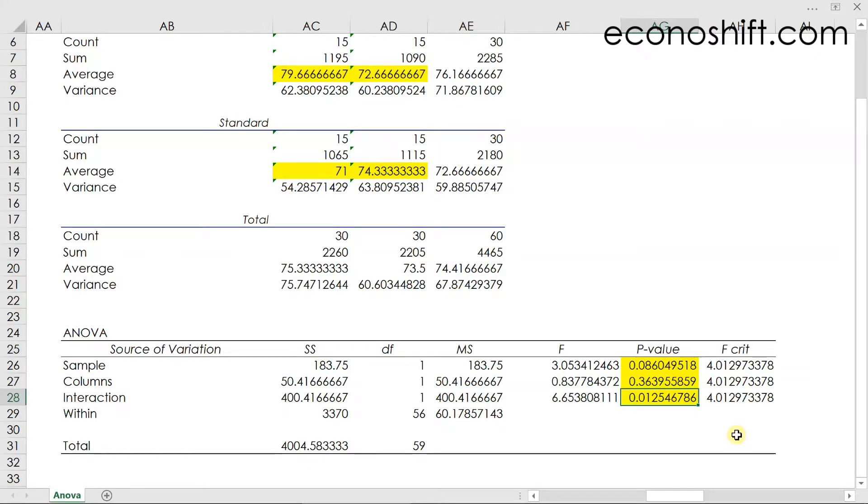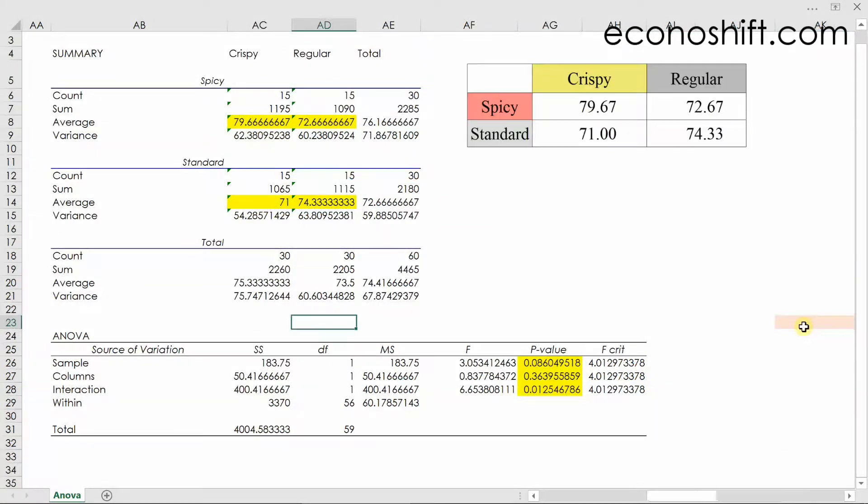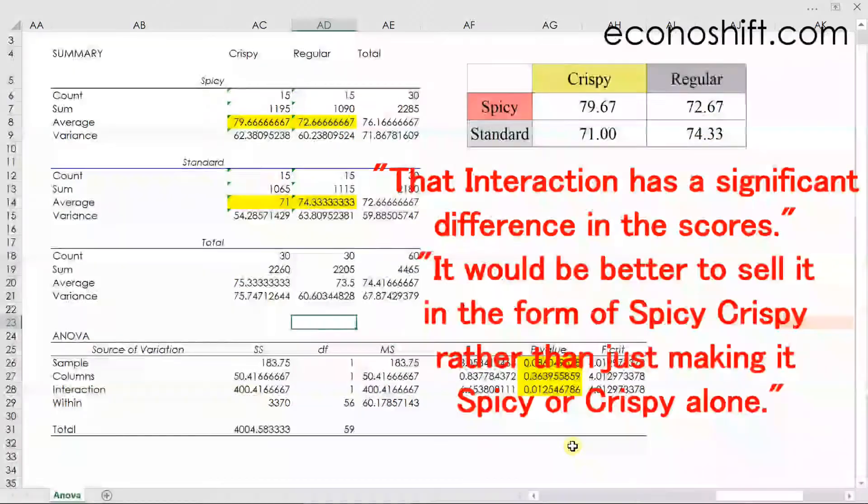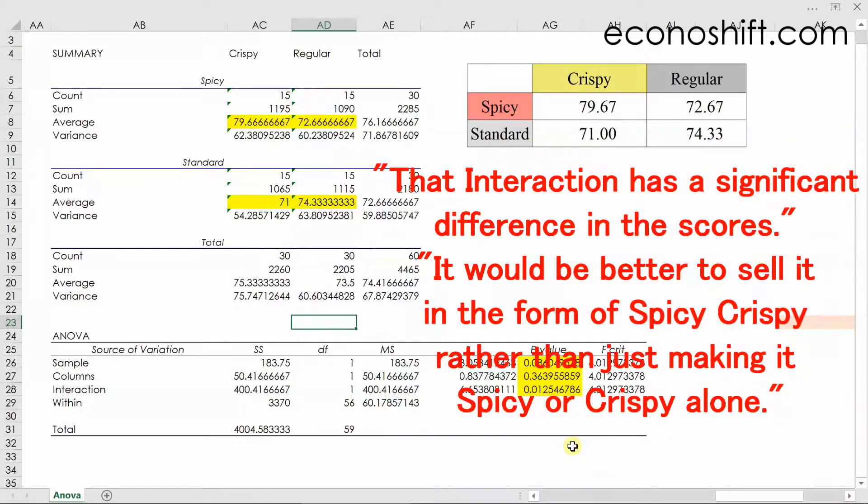Based on this, let's look at the averages of each prototype's scores. The spicy crispy chicken has the highest score. We already knew that that interaction has a significant difference in the scores, so we can conclude that it would be better to sell it in the form of spicy crispy rather than just making it spicy or crispy alone.